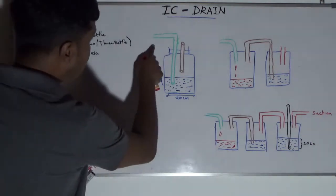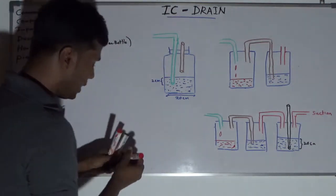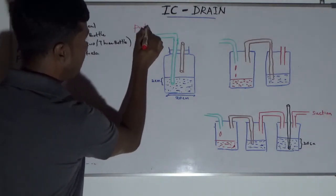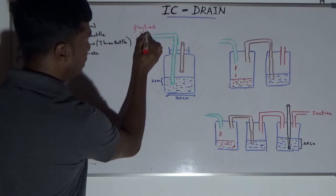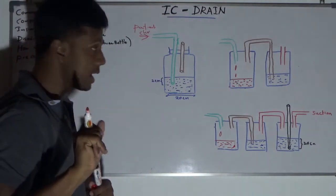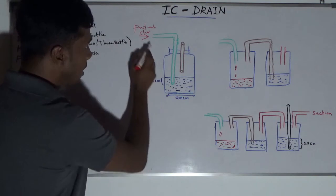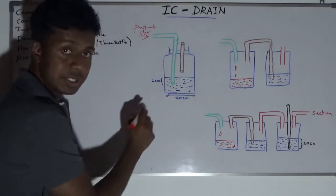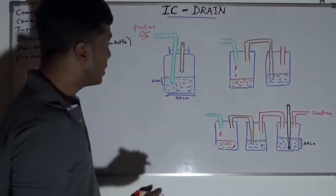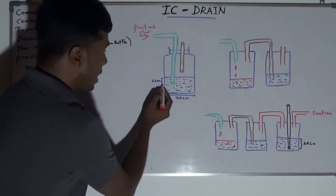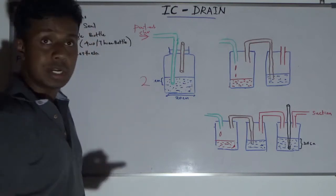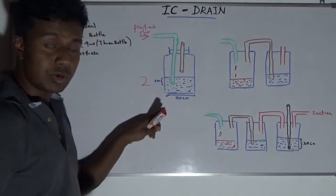The single bottle IC drain system contains a tube which comes from the patient end — from the patient's pleural cavity. That tube is submerged in a water column. The water should be sterile water, submerged nearly about 2 cm — 2 cm submerged within the water column.